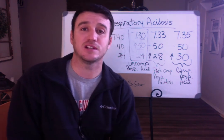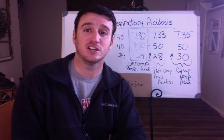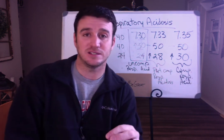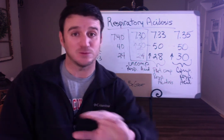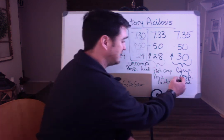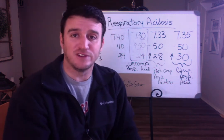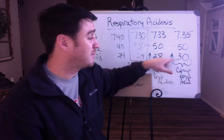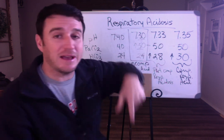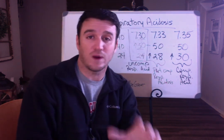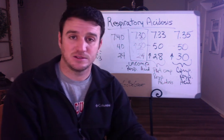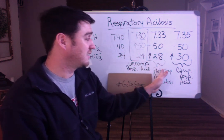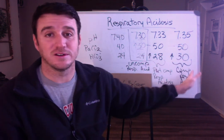You rarely see fully compensated respiratory acidosis unless you're talking about COPD patients — your emphysematics, your COPDers — they live in a compensated respiratory acidosis state. We call this chronic ventilatory failure: the patient chronically lives with a higher CO2, their bicarb chronically stays higher, and they chronically remain at a pH in normal range but on the lower, acidotic end.